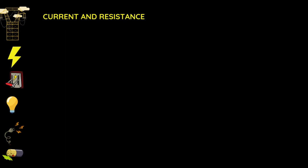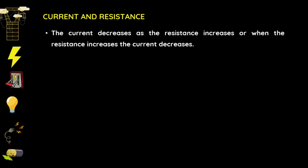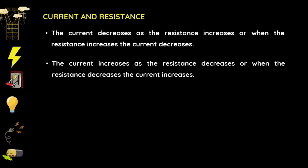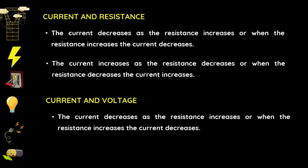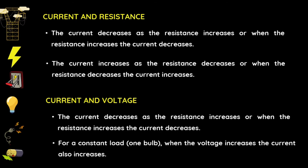Let us remember the following. For current and resistance: current decreases as resistance increases, and current increases as resistance decreases — because current and resistance are inversely proportional. For current and voltage with a constant load: when the voltage increases, the current also increases. So if you add a battery, the current will increase.